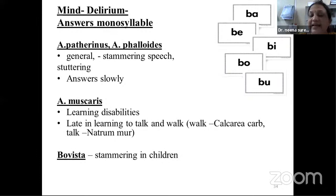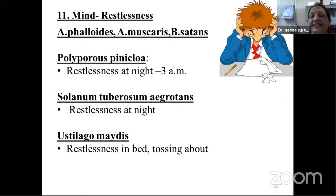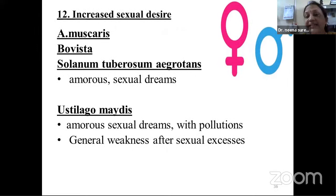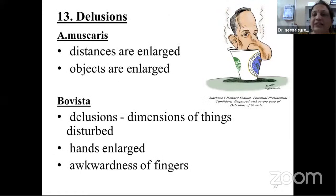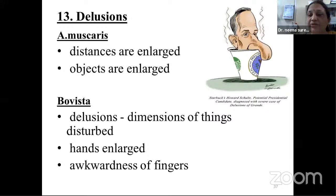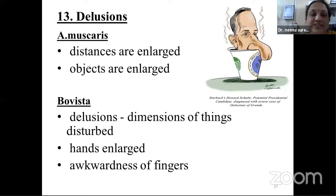Restlessness of mind: all these remedies show restlessness at night with tossing about in bed. Twelfth feature: increased sexual desire and amorous sexual dreams are characteristic of Solanum tuberosum agrotans, Bovista, Agaricus, etc. Ustilago has amorous sexual dreams with pollutions and general weakness after sexual excess. Another important feature: enlarged feeling — distances are enlarged, objects are enlarged, the nose feels enlarged, dimensions of surroundings are enlarged, hands are enlarged, awkwardness of fingers — seen in Agaricus muscaris, Bovista, etc.